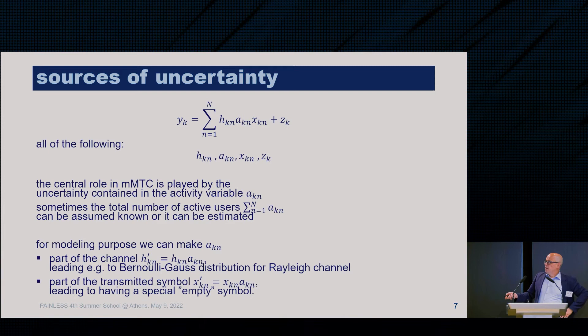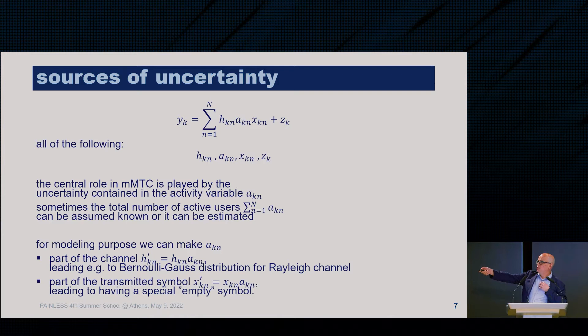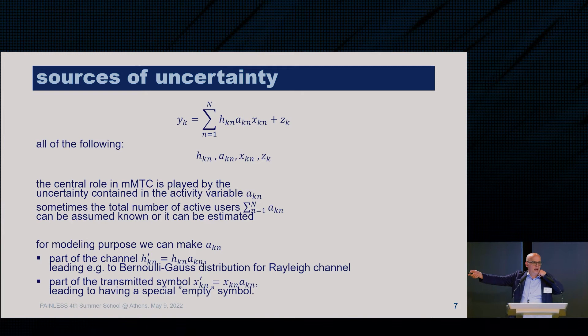The important point is: what are the sources of uncertainty? We want to find out whether AK is one — who is active — and what that device wants to say, which means finding X. We do not really need to find H; channel estimation is just an auxiliary intermediate goal, not the final goal. We have basically four sources of uncertainty, but we are mostly interested in the activity and the transmitted signal XKN.